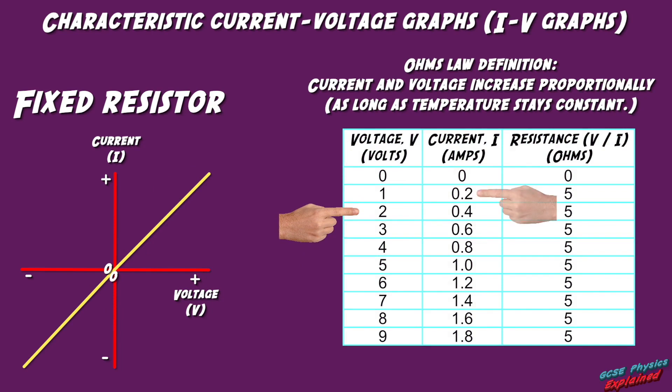You can see as the voltage doubles from 1V to 2V, the corresponding current also doubles, going from 0.2A to 0.4A.